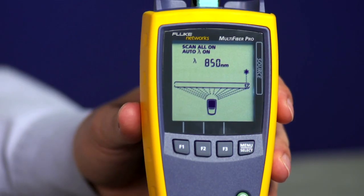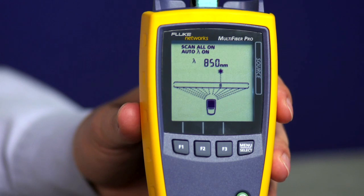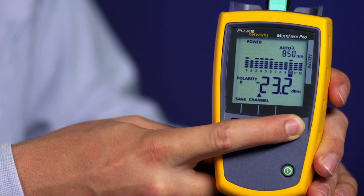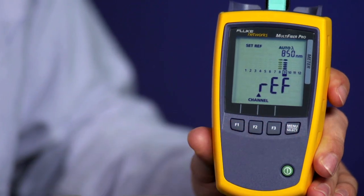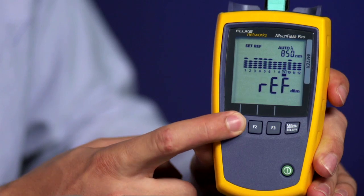Make sure the light source is on Scan All mode with Auto Wavelength on. Once the measurement is ready, press F1 to save the reference.